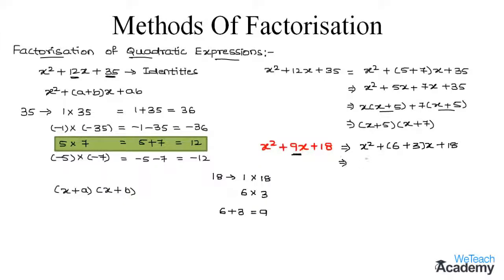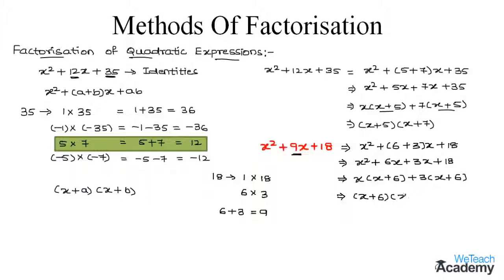Expanding, we write x² + 6x + 3x + 18. Taking x as a common factor gives x(x + 6), and taking 3 as a common factor gives 3(x + 6). Taking (x + 6) as a common factor then gives (x + 6)(x + 3). So these are the factors of x² + 9x + 18.